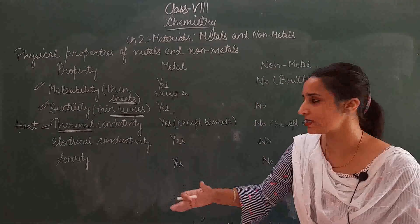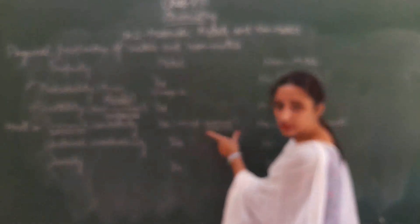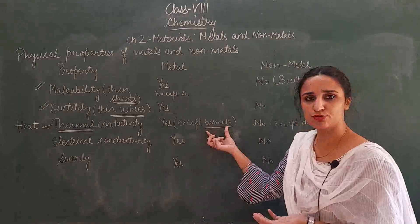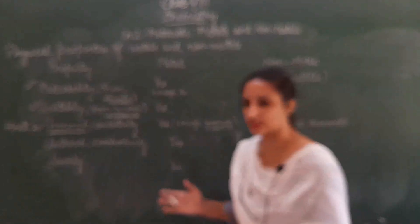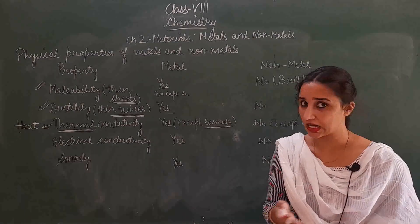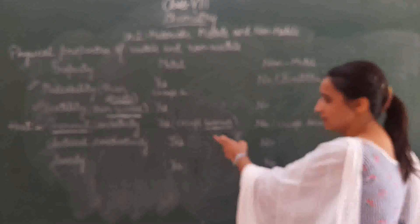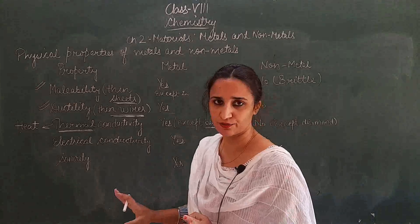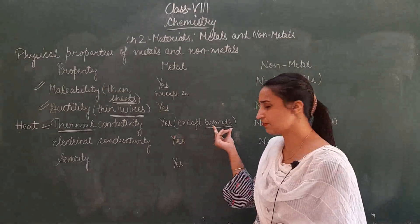All metals allow heat to pass through them, but there is one exception: bismuth. Bismuth does not allow heat to pass through it. Non-metals do not allow heat to pass — for example, wood, carbon, and hydrogen are non-metals through which heat does not pass. However, there is one exception among non-metals: diamond, which is a good conductor of heat. So metals are good conductors of heat except bismuth, and non-metals are bad conductors of heat except diamond.